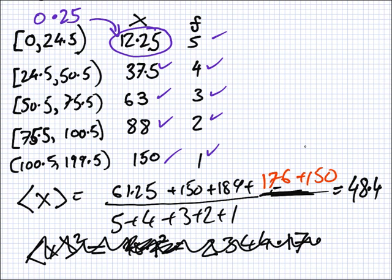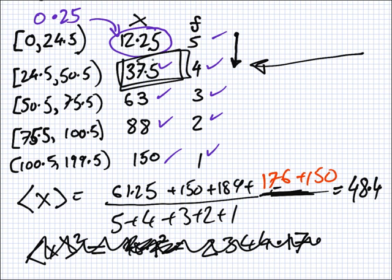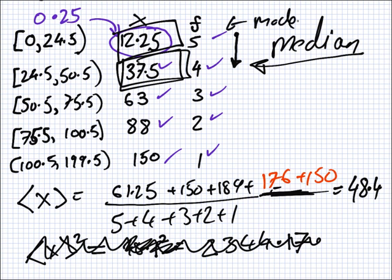How do I get the median? How many do we have here? Five, six, seven, eight, nine, ten, eleven, twelve, fifteen — so if I have 15 numbers the middle number is number eight. Counting from the first class: one two three four five six seven eight — you'd end up in the second bracket. That's the median. The mode is the most frequent class, which gives 12.25 — or 12.5 if you didn't use the boundary correction.